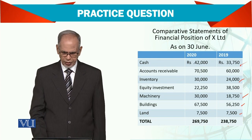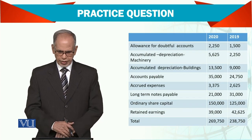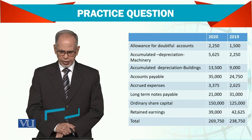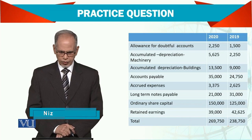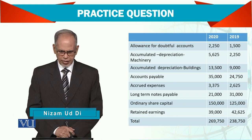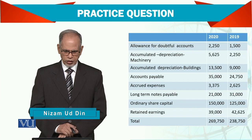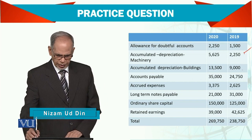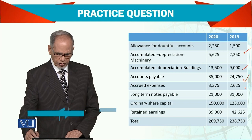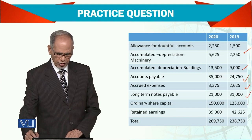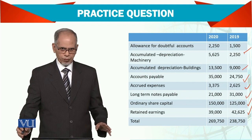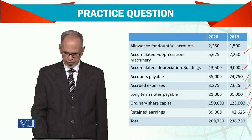And we need to prepare the other side as well. Allowance for bad debts, then depreciation, and accumulated depreciation on building. Accounts payable, accrued expenses, long-term notes payable, ordinary share capital, retained earnings. And the trial balance is complete.